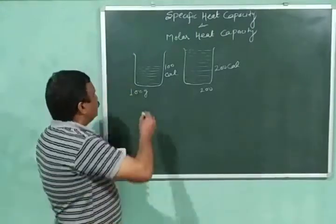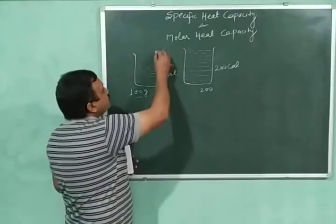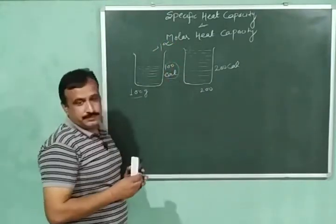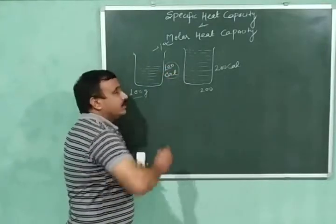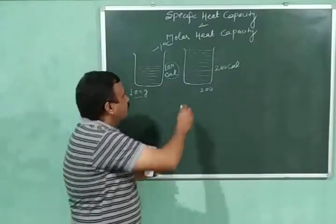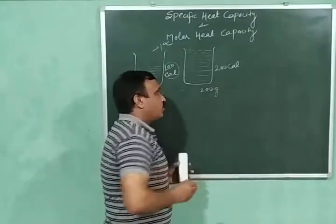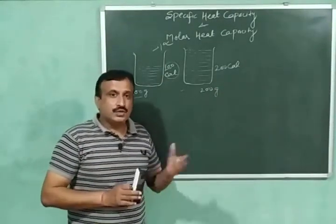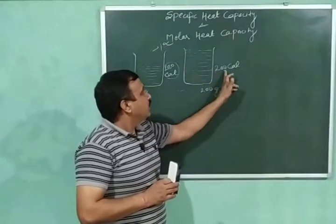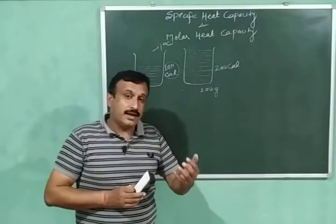Suppose in this container I have 100 grams of water, and to increase its temperature through 1 degree Celsius I require 100 calories of heat. This 100 calorie is the heat capacity of this system. Now in the second container I have double the amount of water — 200 grams. Naturally, to increase its temperature through 1 degree Celsius I will require double the heat, that is 200 calories, because the amount of water has increased. In this way heat capacity is an extensive property.